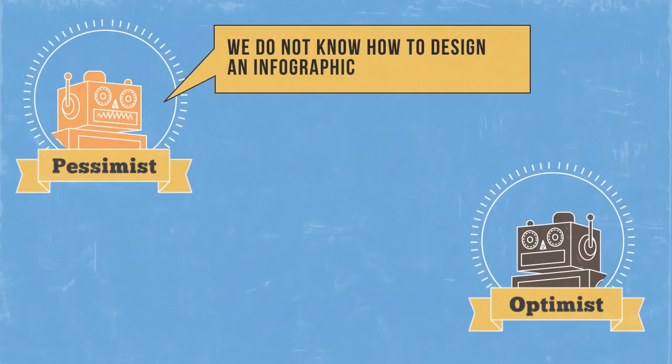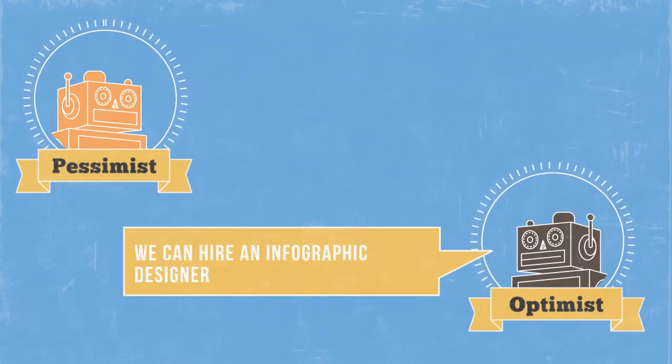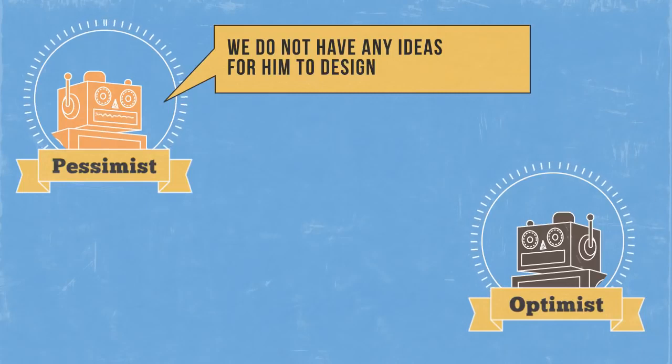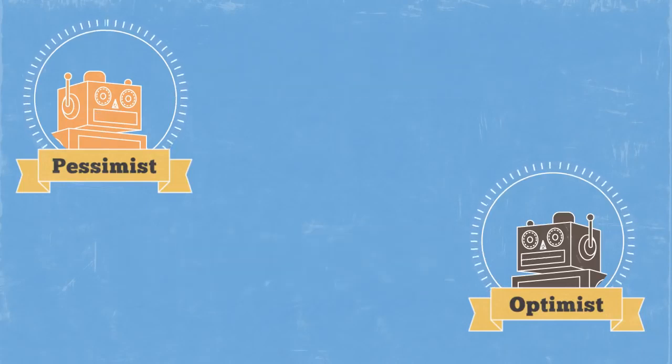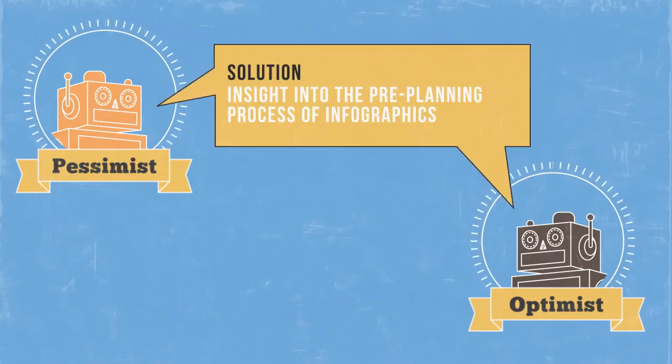For example: We do not know how to design an infographic. We can hire an infographic designer. We do not have any ideas for him to design. We can research ideas and hand him an outline. By building upon each other's responses, a general idea can evolve into a more focused, relevant one.